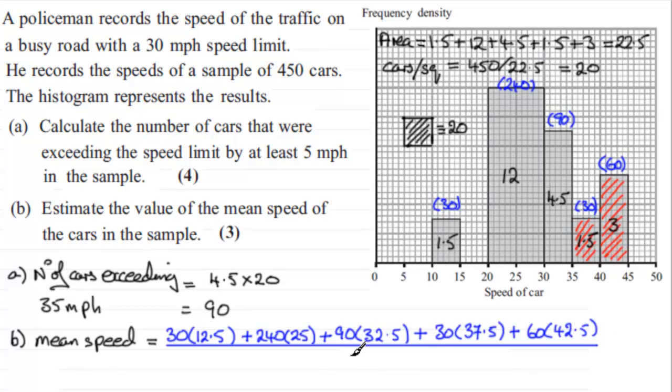This is the total estimated speed of the 450 cars. All we do now is divide this by 450 and work it out, we find that we get 28.83 recurring. That's how you do that one, a bit different from what I've seen before, but hopefully you were able to follow it.